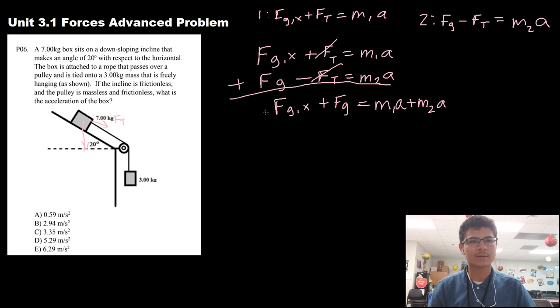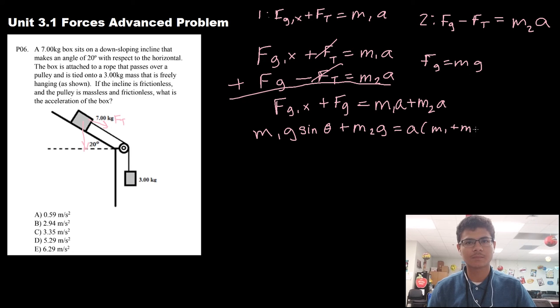Now this here is just the sine of the angle times force of gravity, so let's substitute that in right now. Remember the force of gravity is just m times g. Since we're taking the sine of it, we can do mass of the first box times g sine theta plus mass 2 g equals, I'm going to take out the a out of both of these, that way it will be easier for us to solve, times a times m1 plus m2.